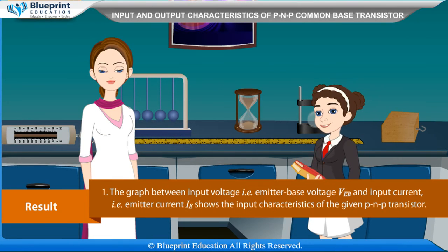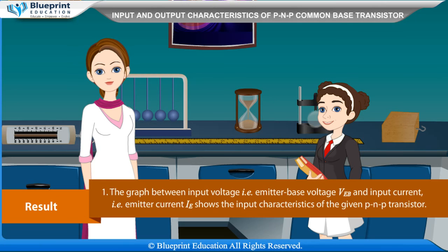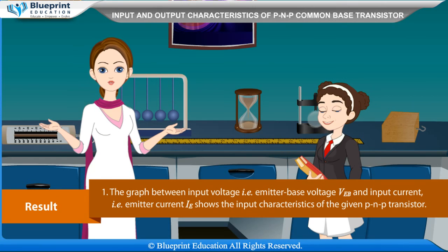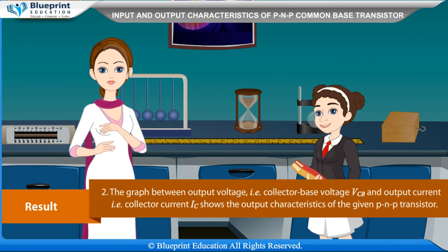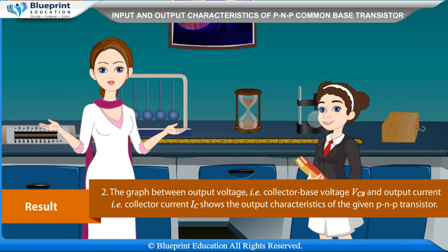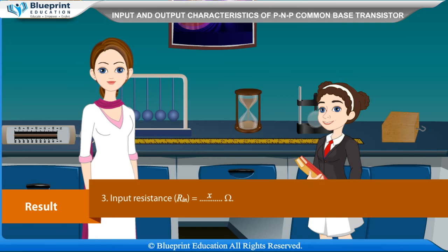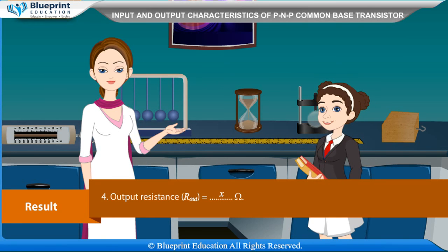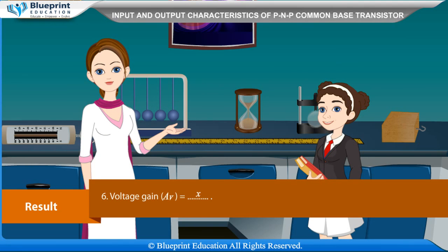Result: The graph between input voltage (emitter-base voltage VEB) and input current (emitter current IE) shows the input characteristics of the given PNP transistor. The graph between output voltage (collector-base voltage VCB) and output current (collector current IC) shows the output characteristics. Input resistance Rin = X ohm, output resistance Rout = X ohm, current gain alpha = X, voltage gain AV = X.